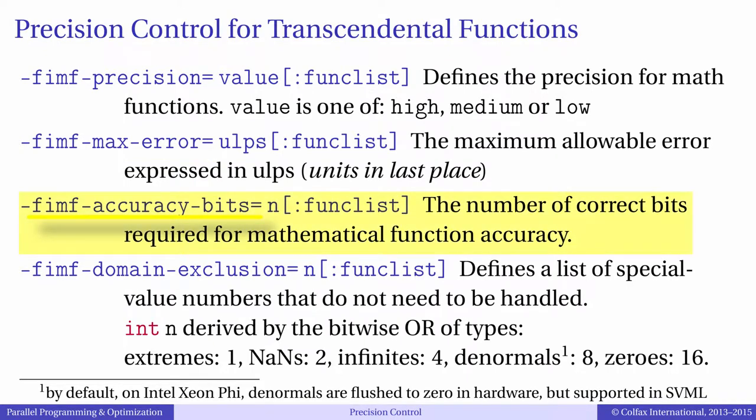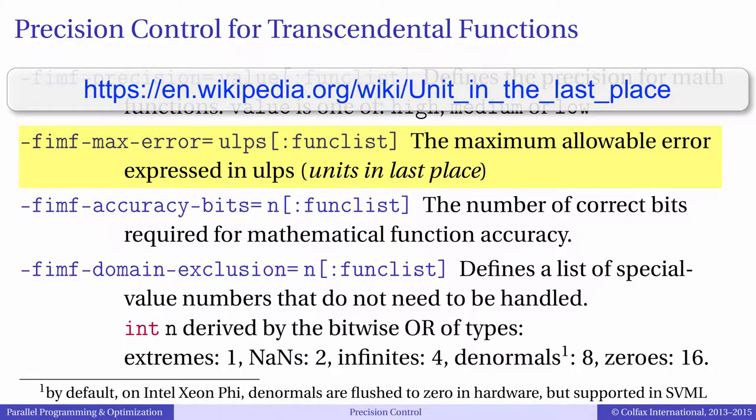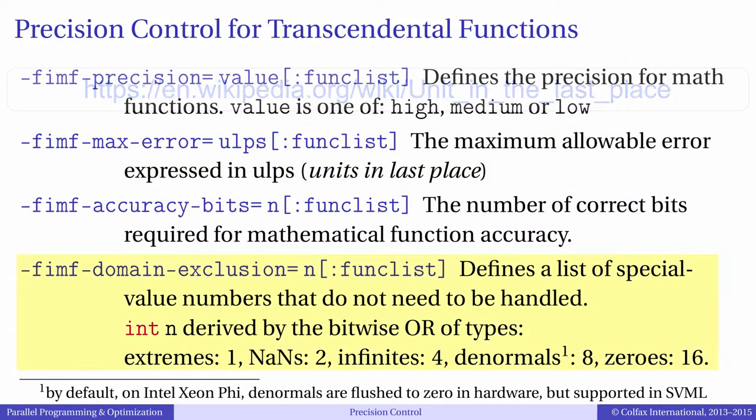The latter sets the number of required correct bits, and the former requests the same metric but in units called ULPs.